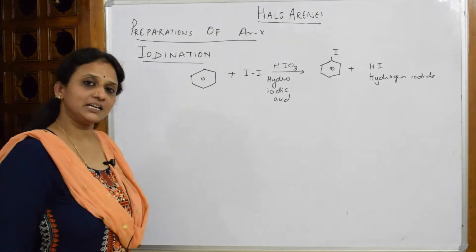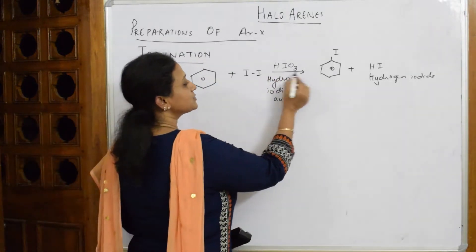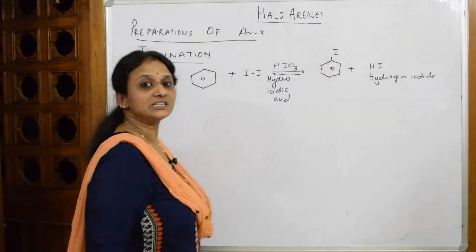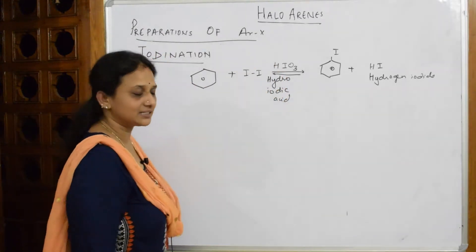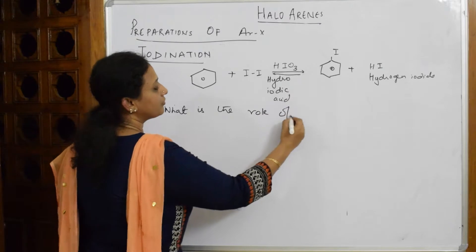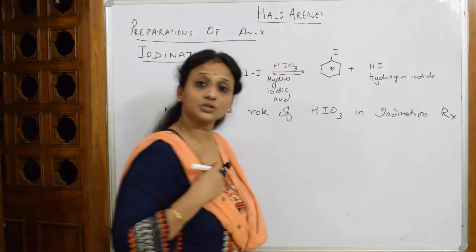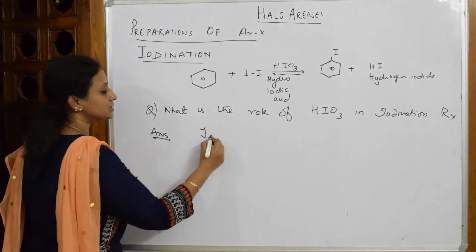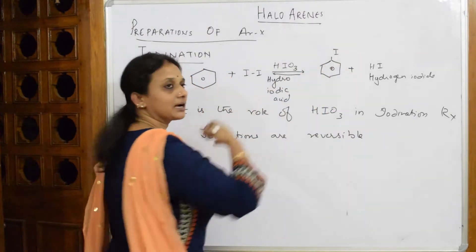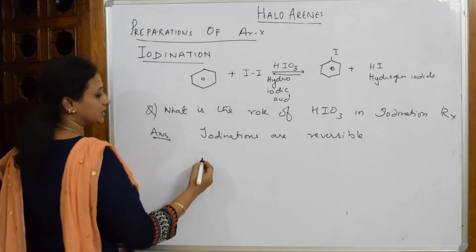Now, the reason iodination cannot be done directly is that iodination reactions are reversible reactions. The forward reaction produces iodobenzene, but the reaction reverses back to give benzene again. Because of this reversibility, we do not get the required product in sufficient yield. So what should we do to prevent the reverse reaction? That is why we add HIO₃.